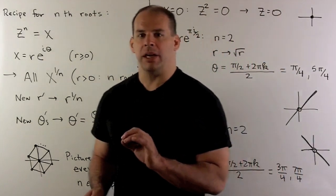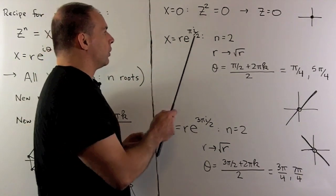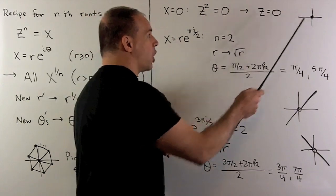Now, let's apply our recipe to our problem. When x is equal to 0, we have z squared equals 0, or z is 0, so we just have the origin in the plane.